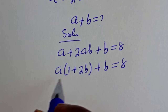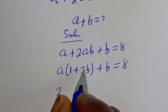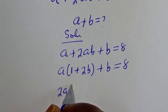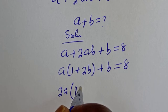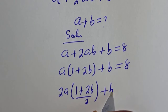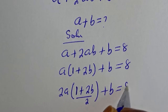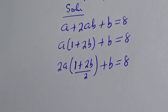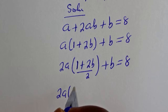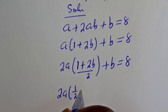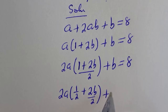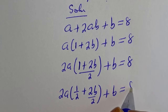Note that if you have 2 divided by 2, that is equal to 1. The left-hand side can be seen as 2 times a bracket, 1 plus 2b over 2 plus b, which equals 8. This is 2 times a bracket, 1 over 2 plus 2b over 2 plus b, is equal to 8.